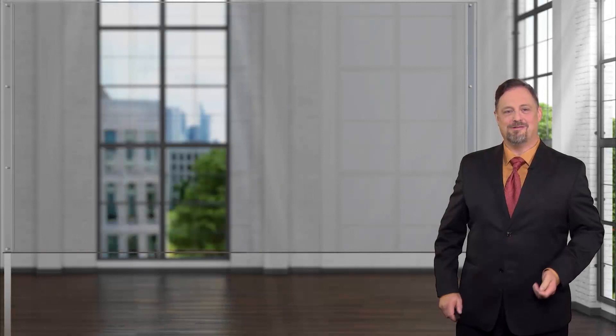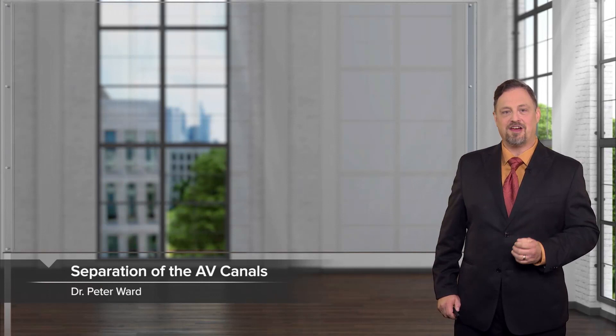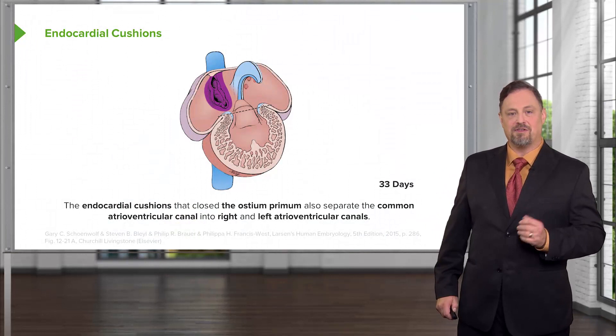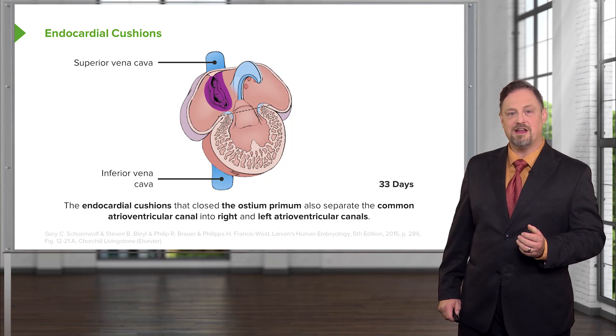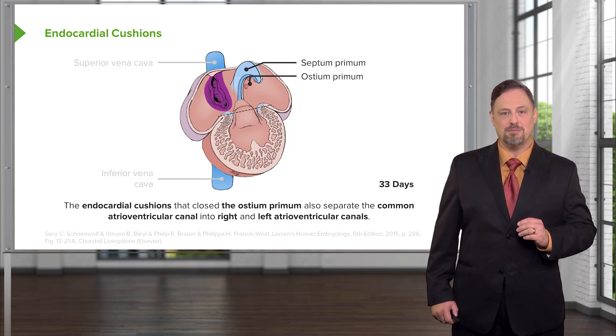Hello and welcome back to our continuing discussion of formation of the heart. We're going to discuss how the atrioventricular canals and the ventricles separate to form the mature structures of the heart. Starting with a view of the heart, we have the superior and inferior vena cava leading into the right atrium. The right atrium is being separated from the left atrium by the septum primum, but they're still communicating with each other through the ostium primum.